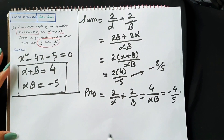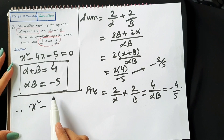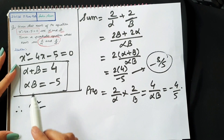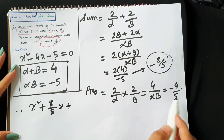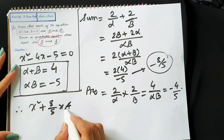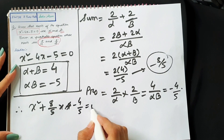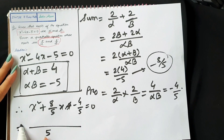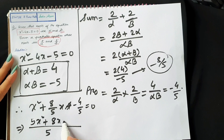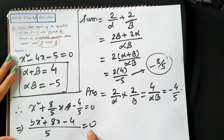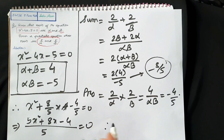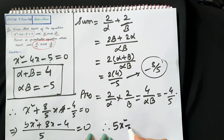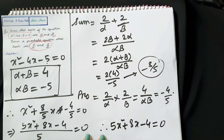Now that we know the sum is minus 8 by 5 and the product is minus 4 by 5, the quadratic equation is x² minus (minus 8 by 5)x plus (minus 4 by 5) equals 0, which gives x² plus (8/5)x minus (4/5) equals 0. Taking LCM of 5 and simplifying, the final quadratic equation is 5x² plus 8x minus 4 equals 0.